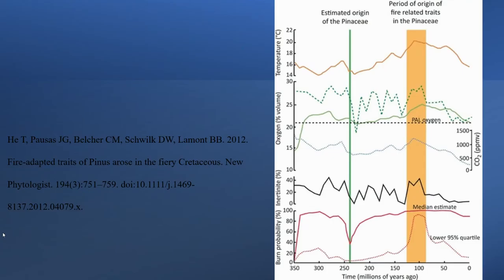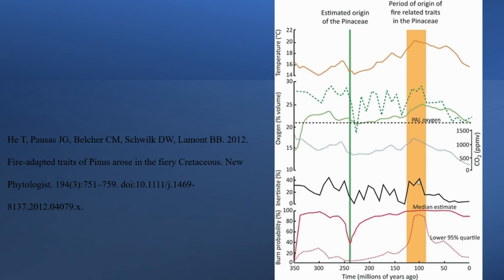This figure shows some of the climate factors I was talking about. You can see temperature was high, oxygen percentage was high, and inertinite — which is fossilized charcoal indicating the presence of forest fires — was high. The burn probability was also high. As mentioned, forest fires disrupted gymnosperm forests and led to angiosperms becoming dominant. You'll see the adaptations that pine trees had to fire later.